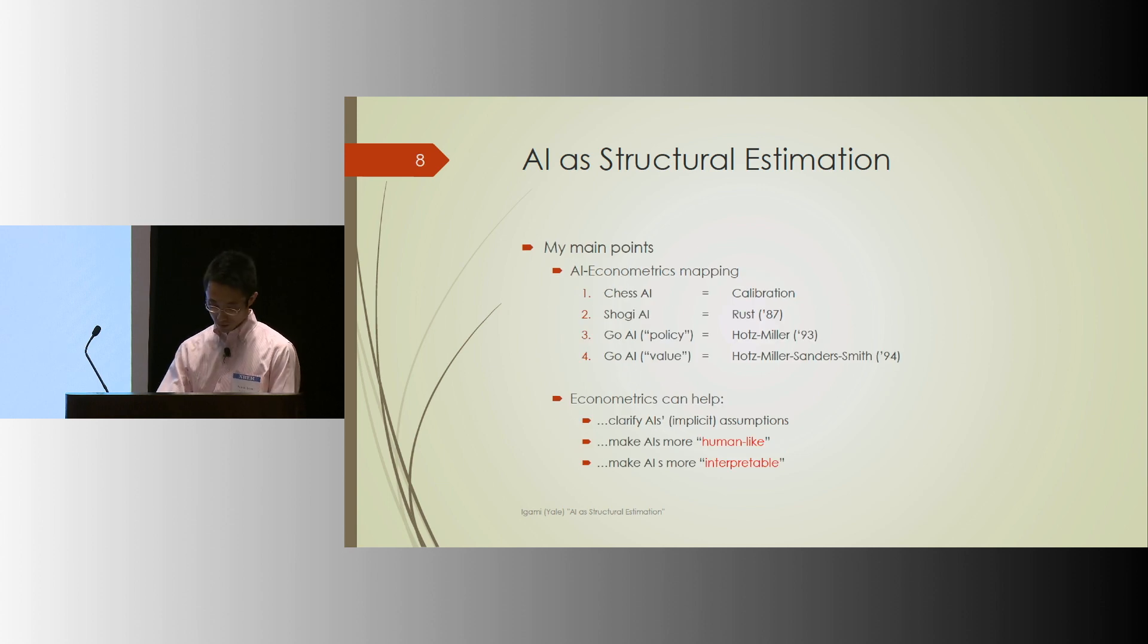And it turns out that many of the AI components have their conceptual counterparts in economics. In fact, I found that the algorithms to develop Bonanza, the Shogi AI, and Go are mathematically equivalent to standard methods for estimating dynamic structural models. So that's my main point today.